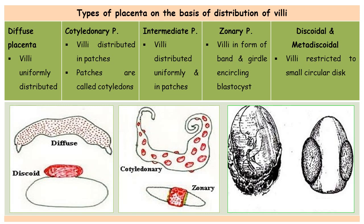The next is the zonary placenta. In this type, the villi are arranged in the form of a definite band or girdle around the blastocyst. It may be complete zonary placenta, where the band is complete around the blastocyst, or incomplete zonary placenta, where some portion of the blastocyst is without the cover of zonary villi. This type of zonary placenta is found in dogs, cats, and elephants.